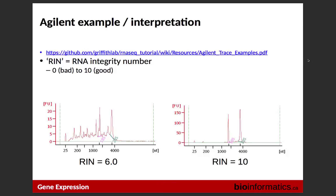We'll walk through the RNA sequencing process from step one. The first thing you need to do is make sure the quality of the RNA is good. One way to do that is by looking at the RIN number — RNA Integrity Number — which assigns a score ranging from 0 to 10. Zero is very bad quality RNA and 10 is very high quality.